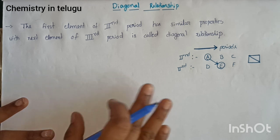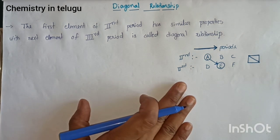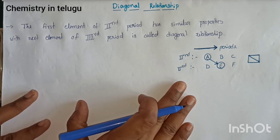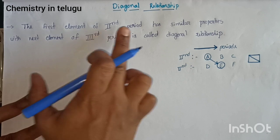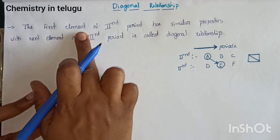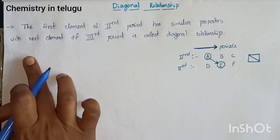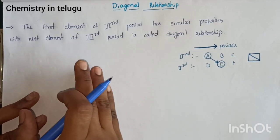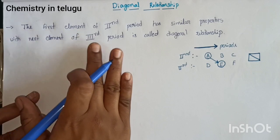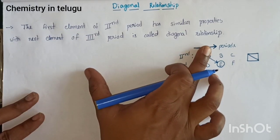What is Diagonal Relationship? Diagonal Relationship is what we will see in this periodic table. The first element of the second period has similar properties to the next element of the third period. When the first element has similar properties to that next element, we have a Diagonal Relationship.